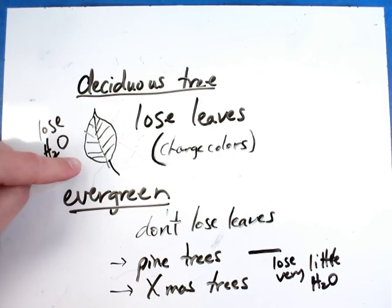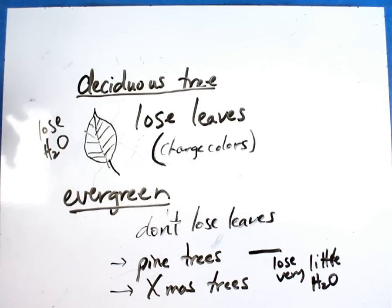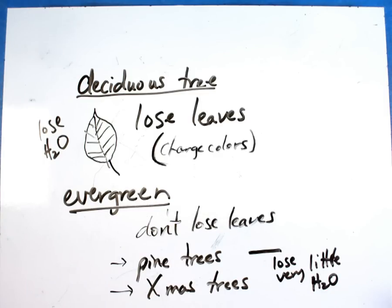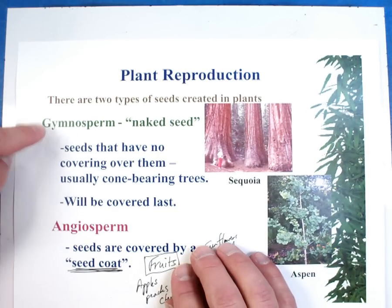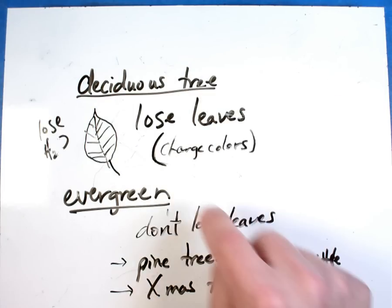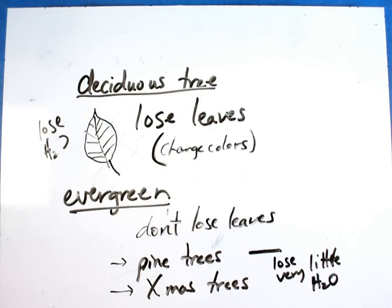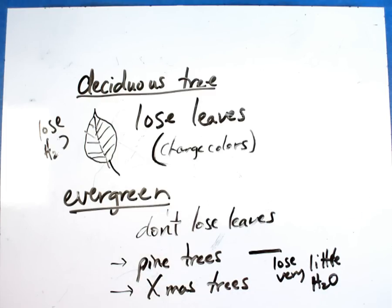Deciduous trees have the big leaves that tend to fall off, they change colors, and they lose a lot more water compared to evergreens. Evergreens don't lose their leaves unless the plant itself dies. In this video, we've talked about the differences between gymnosperms and angiosperms — gymnosperms have the naked seed, angiosperms are the ones that have fruits — and the difference between deciduous trees and evergreen trees and how their leaves are completely different. These cover the parts of trees and plants: deciduous, gymnosperms, and angiosperms.